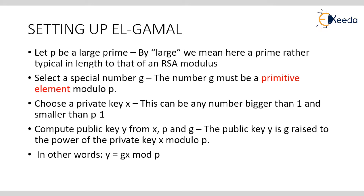In this algorithm, we have to consider a large prime number P, in the same manner as in the Diffie-Hellman key exchange. By large, we mean a prime number typical in length to that of an RSA modulus — that is, the value of small n chosen in RSA. We also have to select a number G, which must be a primitive element of P.